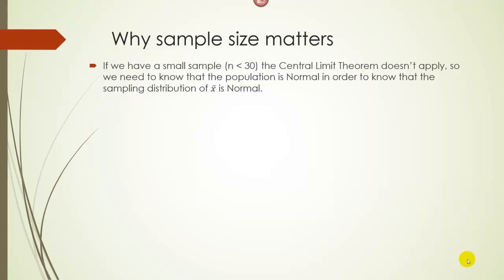With the central limit theorem, if you have a large sample, you know the sampling distribution of sample means — X-bars — are going to be normal no matter what the population looks like. But if we have a small sample, the central limit theorem doesn't apply, so we need to know that the population itself is at least mound-shaped and symmetrical, or perfectly normal, in order to know that the sampling distribution of X-bar is also normal.